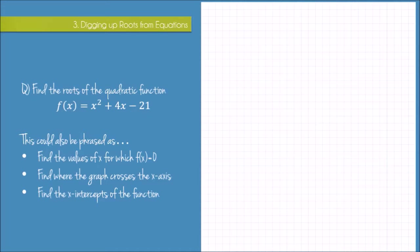Remember that the roots of a function are just the input values that give you an output of 0. When we have a function given in this notation, f(x) is our output and x is our input, so we are looking for the x values that will give us an f(x) value of 0.